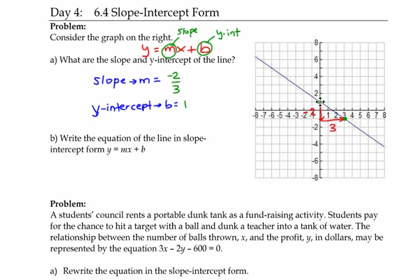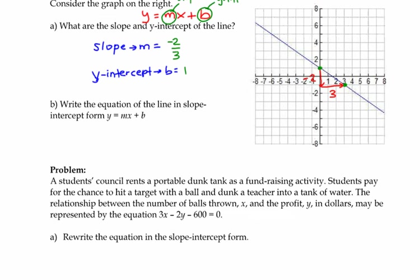So the next question says, write the equation of the line in slope-intercept form. So that's our y equals mx plus b. So we're just plugging it into y equals mx plus b. What's our m value? What was our slope? Negative two over three. Don't forget to write your x. Its common mistake is forgetting the x. And then plus one. And there's our equation. A lot of it's review. And then we'll get into one concept that's new.